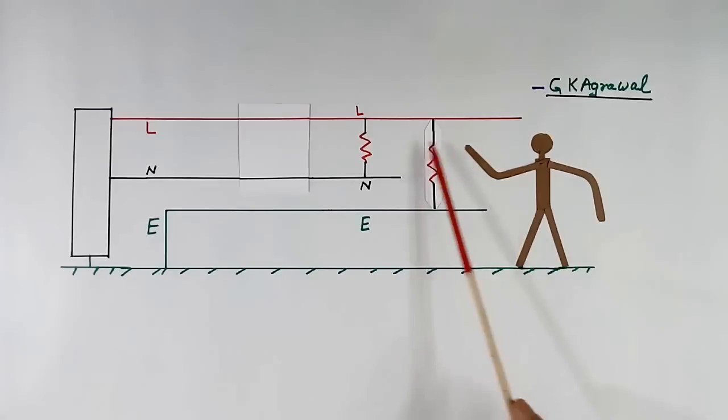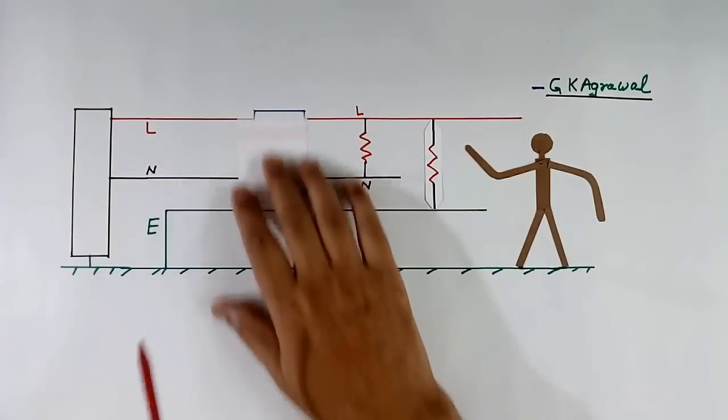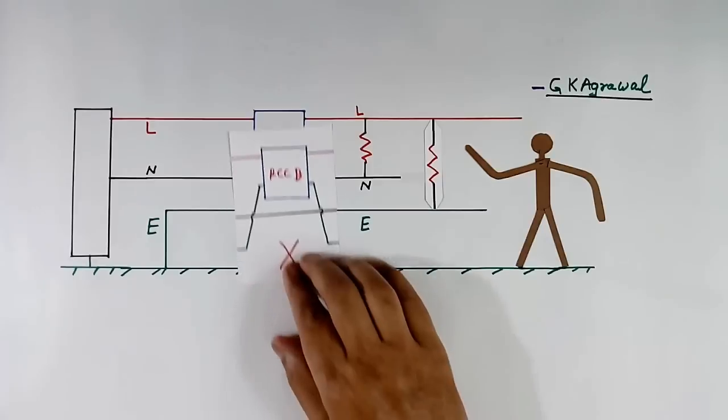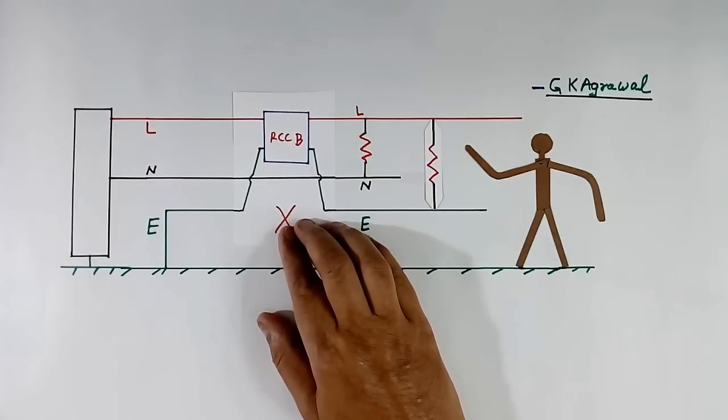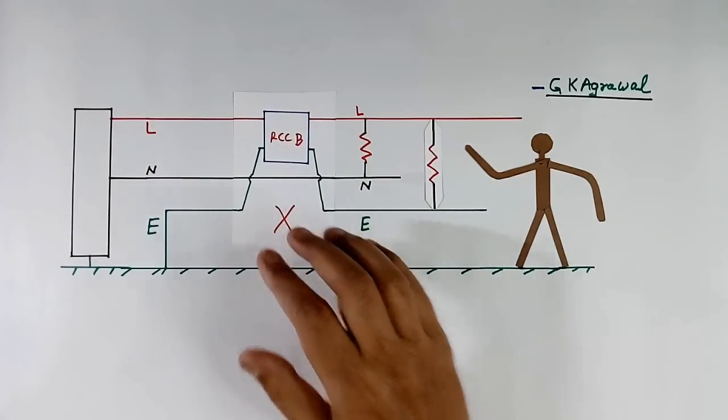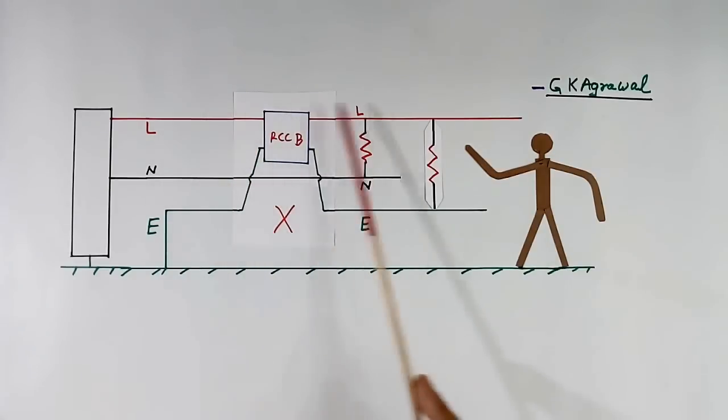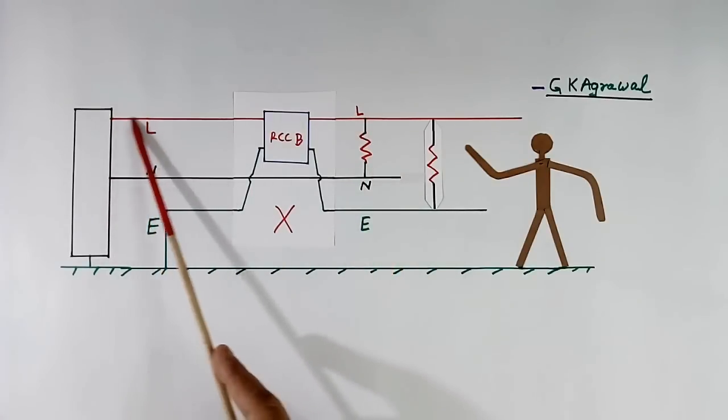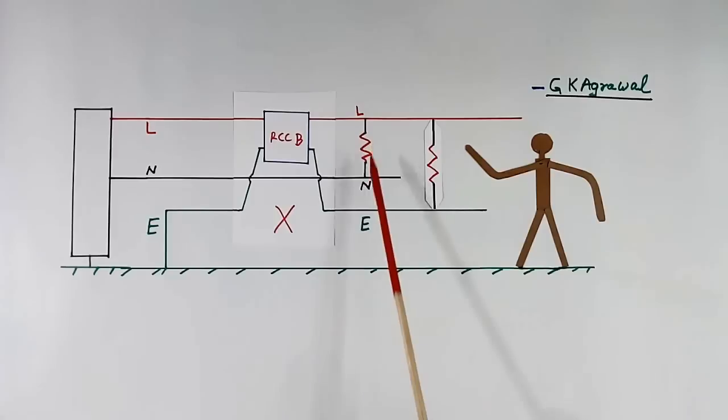Now another method to get power here is to connect RCCB like this. Now RCCB is connected between line and earth wire, green wire. But in this case what will happen? Normal load connected between line and neutral will not get any power, because current will flow like this. Whatever current is going through line will come back through neutral and will not pass through RCCB, and RCCB will trip.